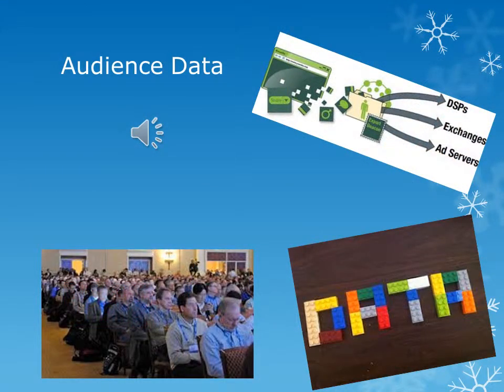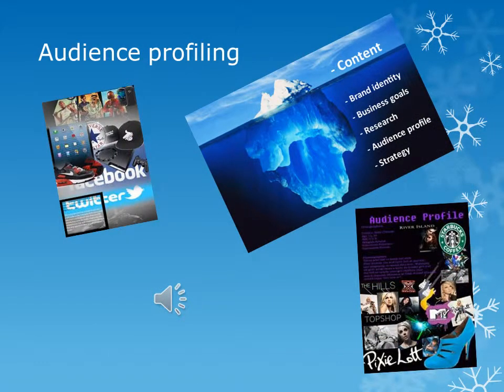Audience data is collected information from the buyer, seeing how many people watch TV or listen to the radio. This is secondary research because you have to gain information by researching through websites or by doing a survey. I've used this by collecting information on a survey which told me the amount of people who watched a certain genre, which helped me figure out what to do for a movie trailer.